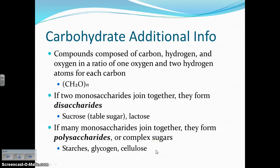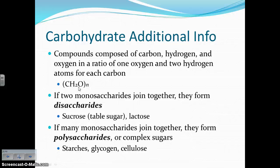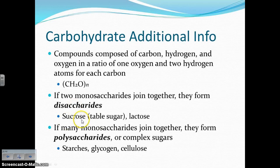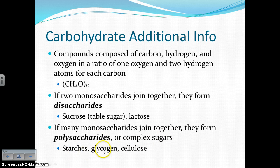Some additional information for carbohydrates: they're made up of carbon, hydrogen, and oxygen in a ratio of one oxygen and two hydrogen atoms for each carbon atom. That subunit CH₂O gets repeated over and over to join together to make the macromolecule. Terms you also want to write down are disaccharides and polysaccharides. Disaccharides are when you have two monosaccharides joined together — di means two — so disaccharides would be sucrose, which is table sugar, and lactose. Polysaccharides means many monosaccharides joined together to form more complex sugars, like starches, glycogen, and cellulose.